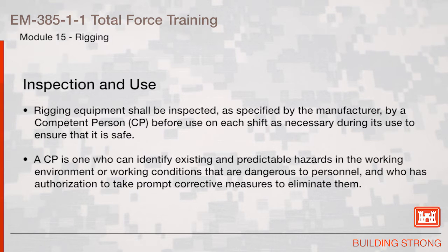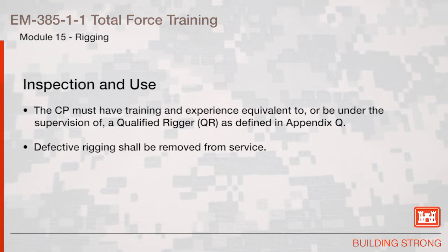Inspection and Use. Rigging equipment shall be inspected as specified by the manufacturer by a competent person before use on each shift, and as necessary during its use to ensure that it is safe. A competent person is one who can identify existing and predictable hazards in the working environment that are dangerous to personnel and who has authorization to take prompt corrective measures to eliminate them. The competent person must have training and experience equivalent to or be under the supervision of a qualified rigger as defined in Appendix Q.